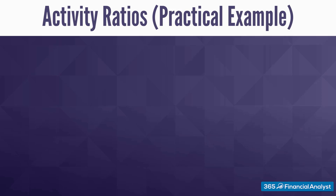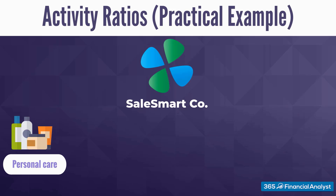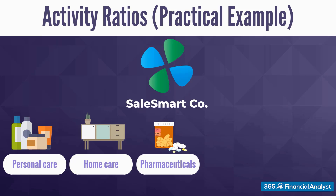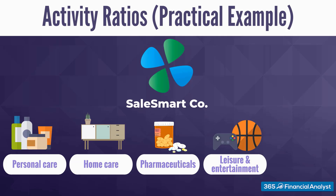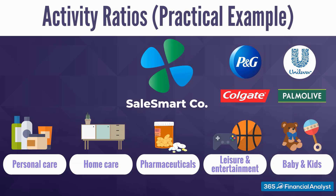For illustrative purposes, we will use the financial statements of a company called SalesSmart Co. It specializes in the retail sector, selling a wide variety of consumer goods — from home and personal care products, to health and pharmaceuticals, leisure and entertainment, as well as baby care products. It has many stores all over the world. SalesSmart's major competitors are companies like Procter & Gamble, Unilever, Colgate-Palmolive, and other companies in the consumer goods industry.